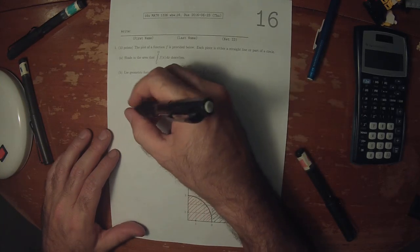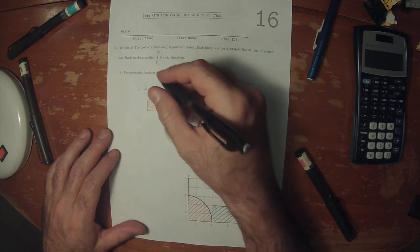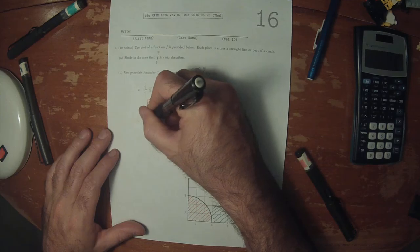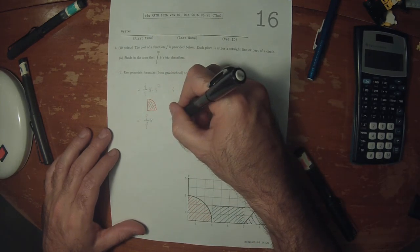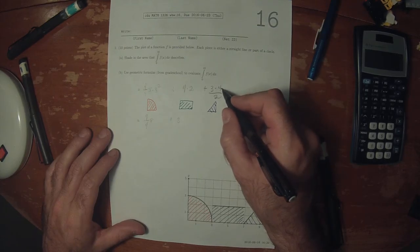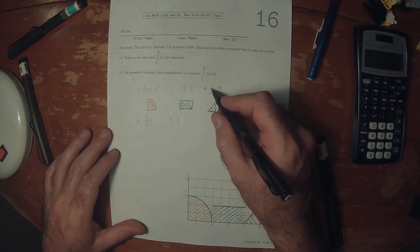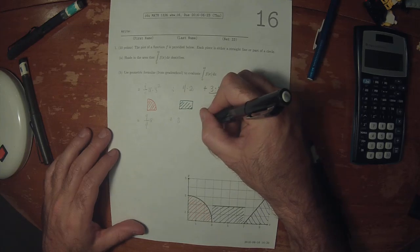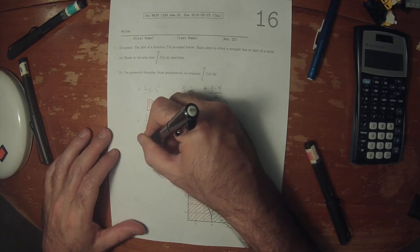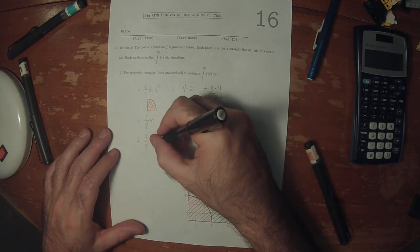And then simplifying this a little bit, that would be nine over four pi, plus eight. Four over two is two, times three is six. So nine over four pi, plus 14.